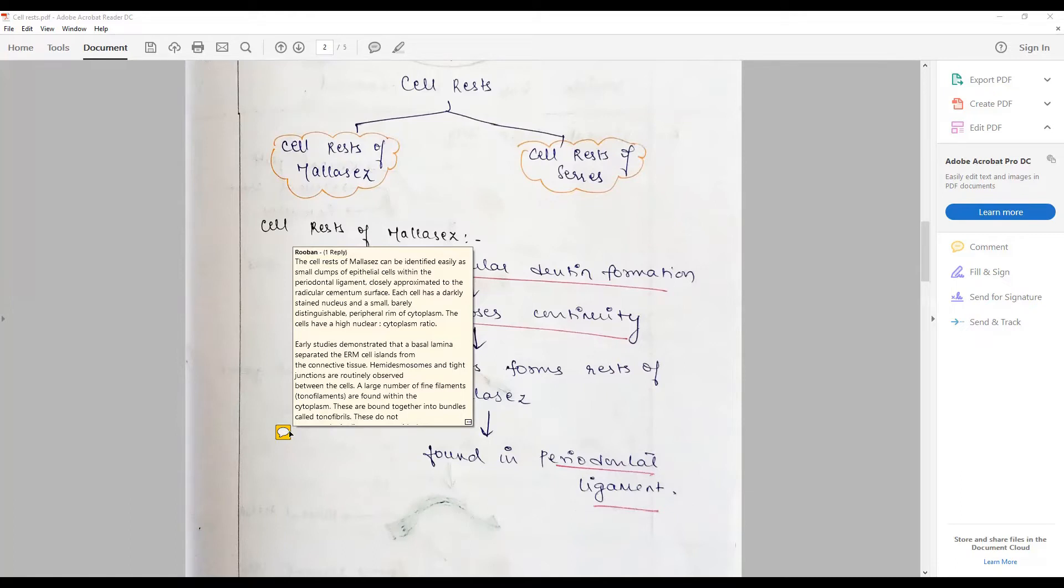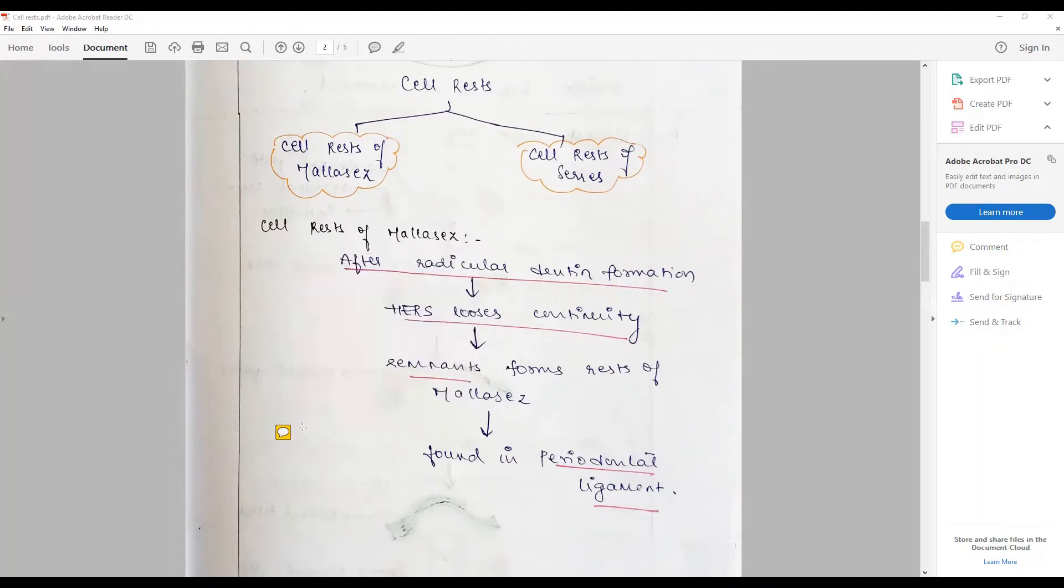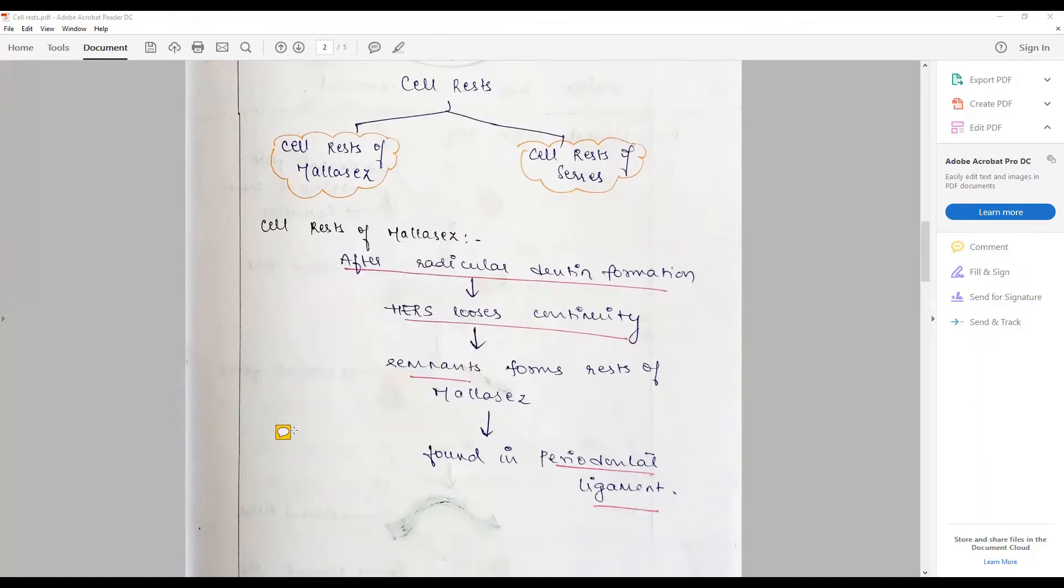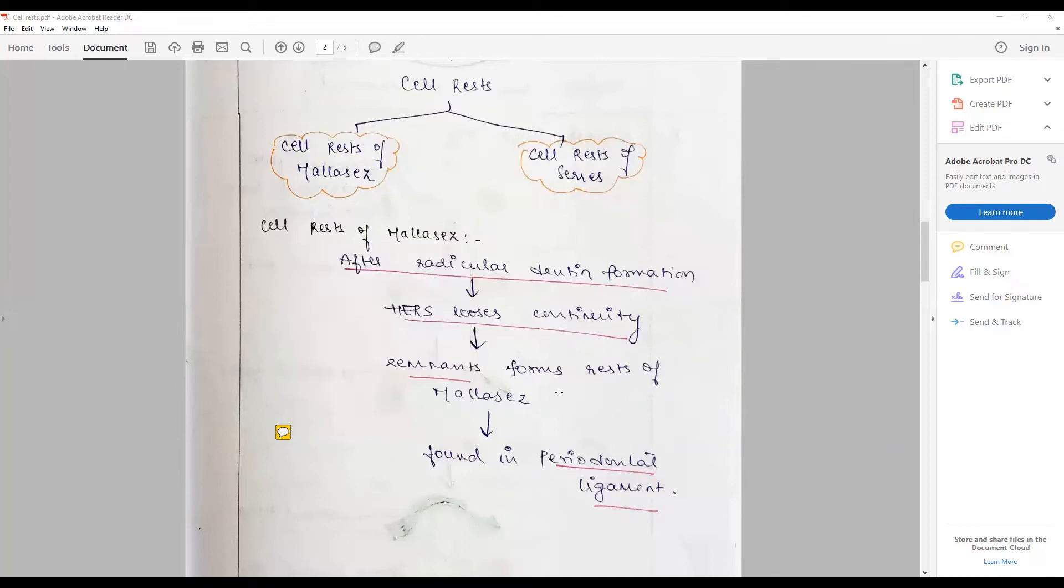A large number of fine tonofilaments are found within the cytoplasm and they are bound together by the tonofibrils. However, they do not have rough endoplasmic reticulum, indicating they are not very active.